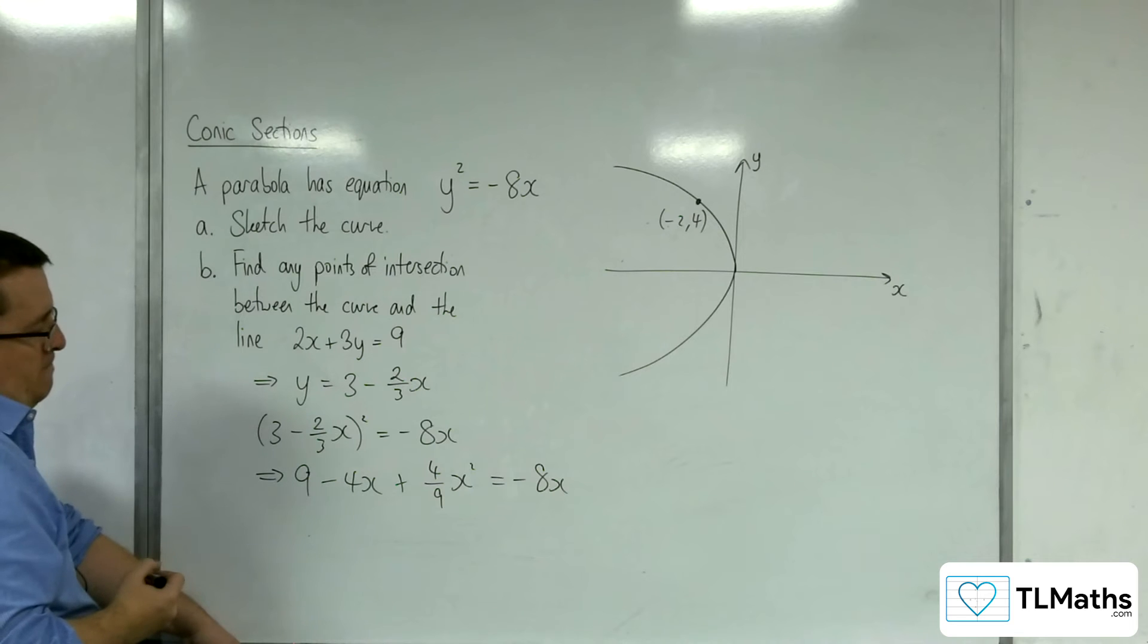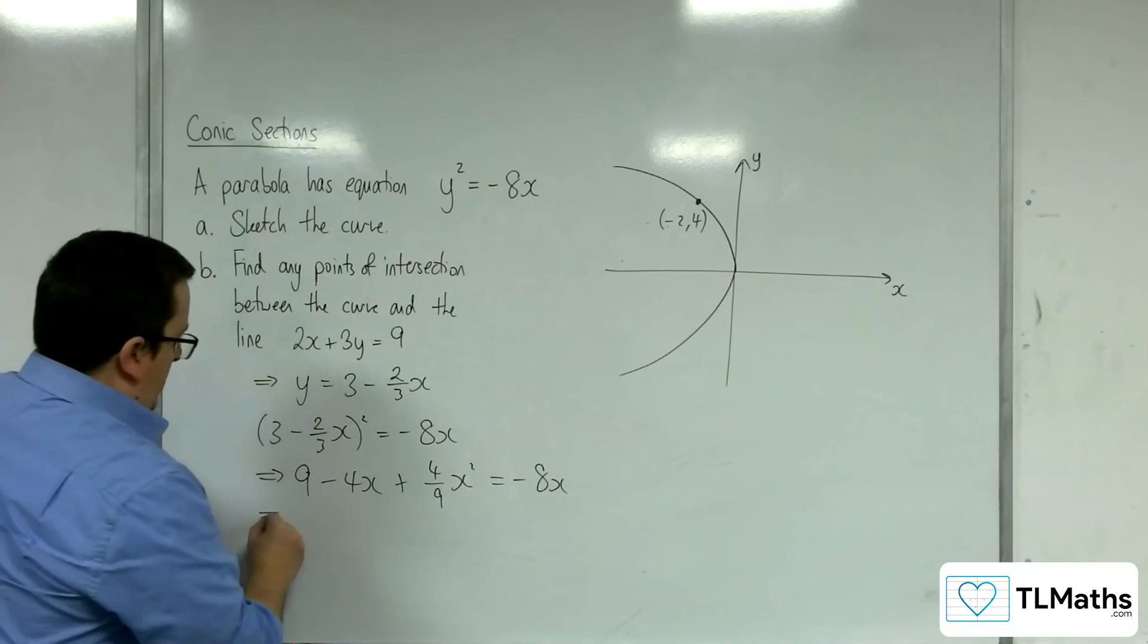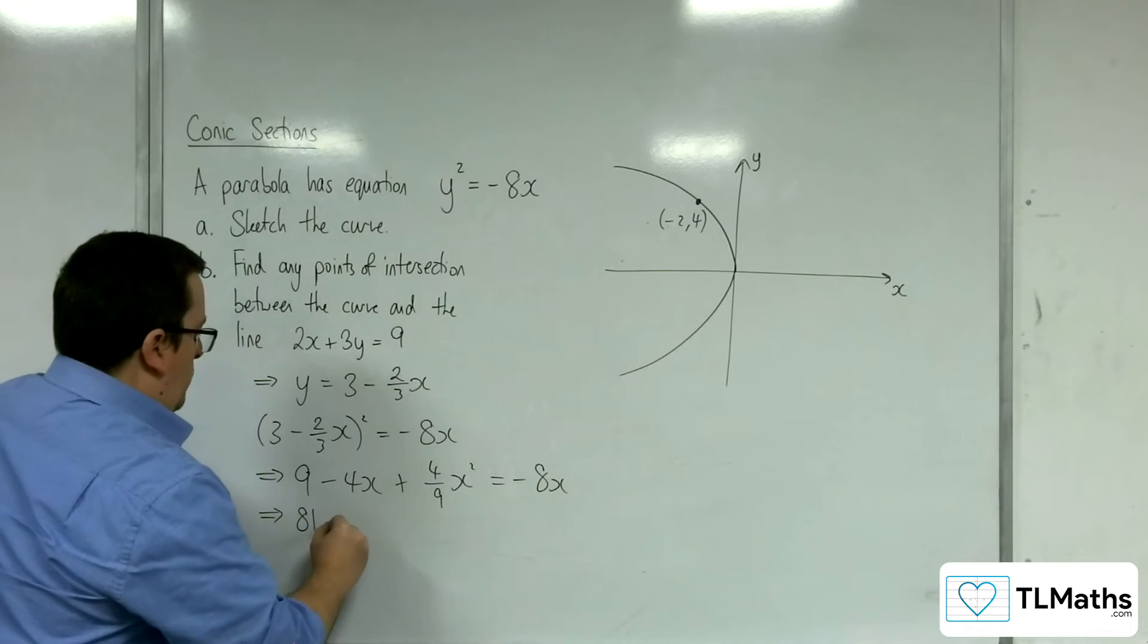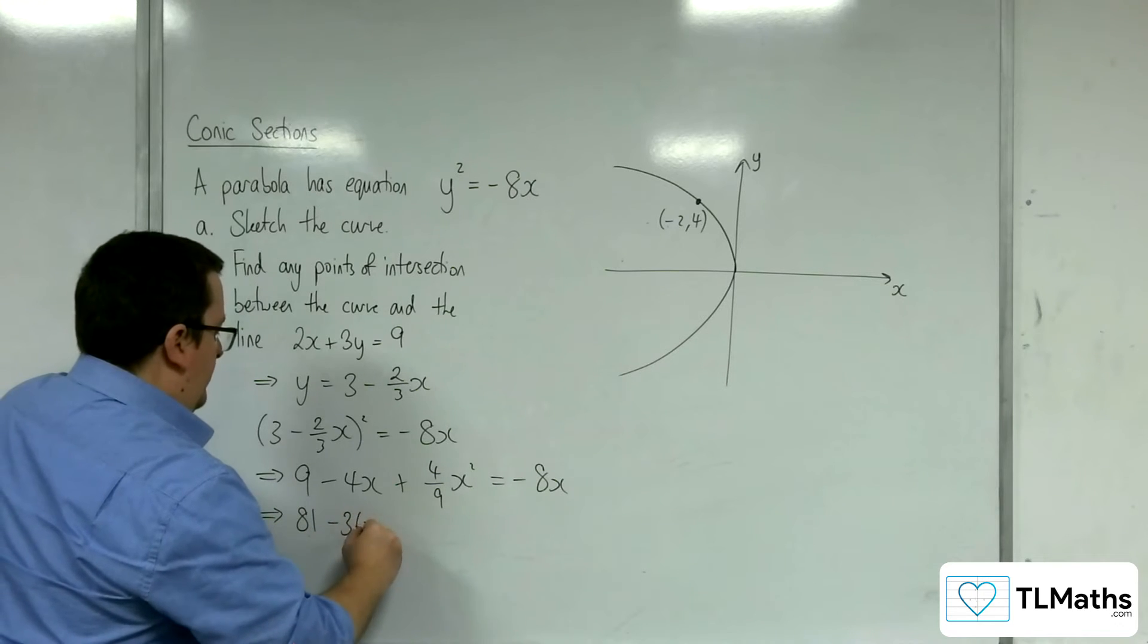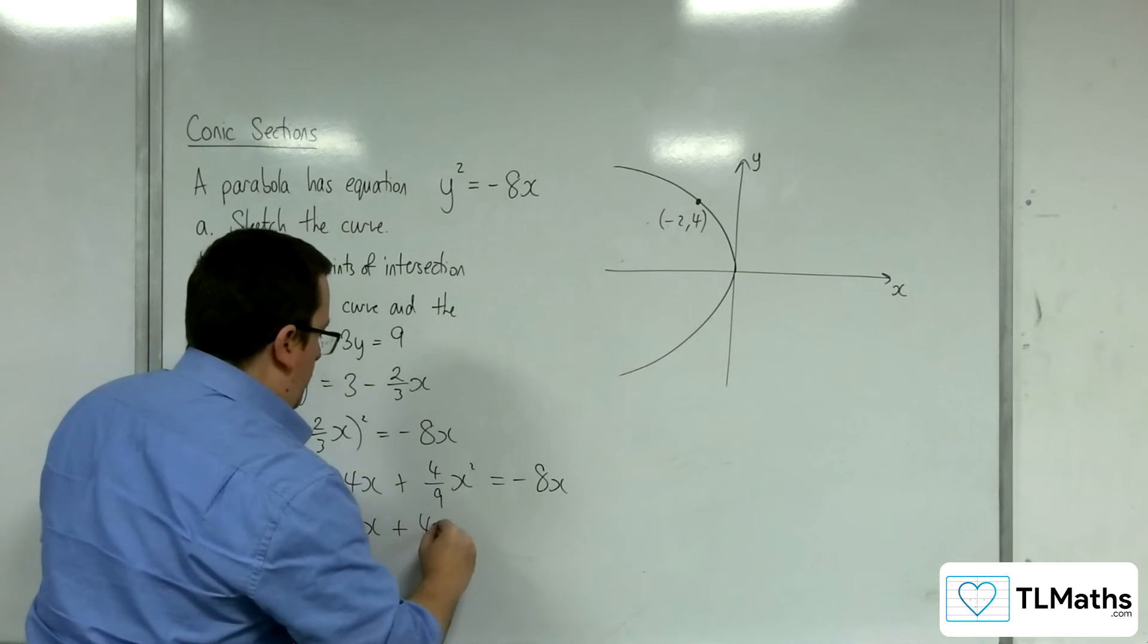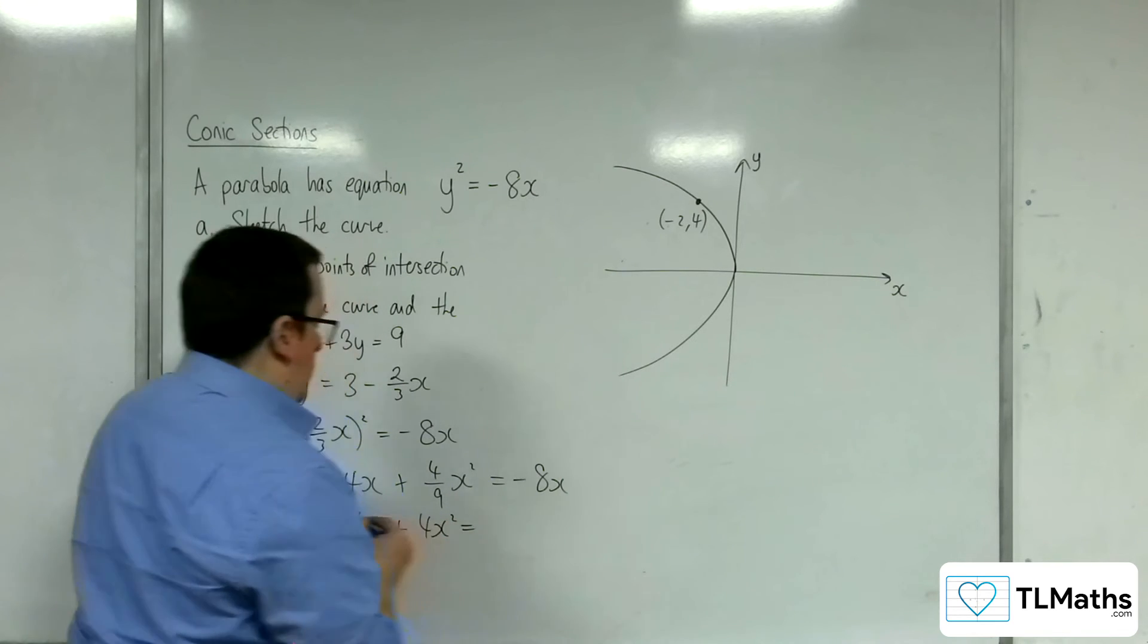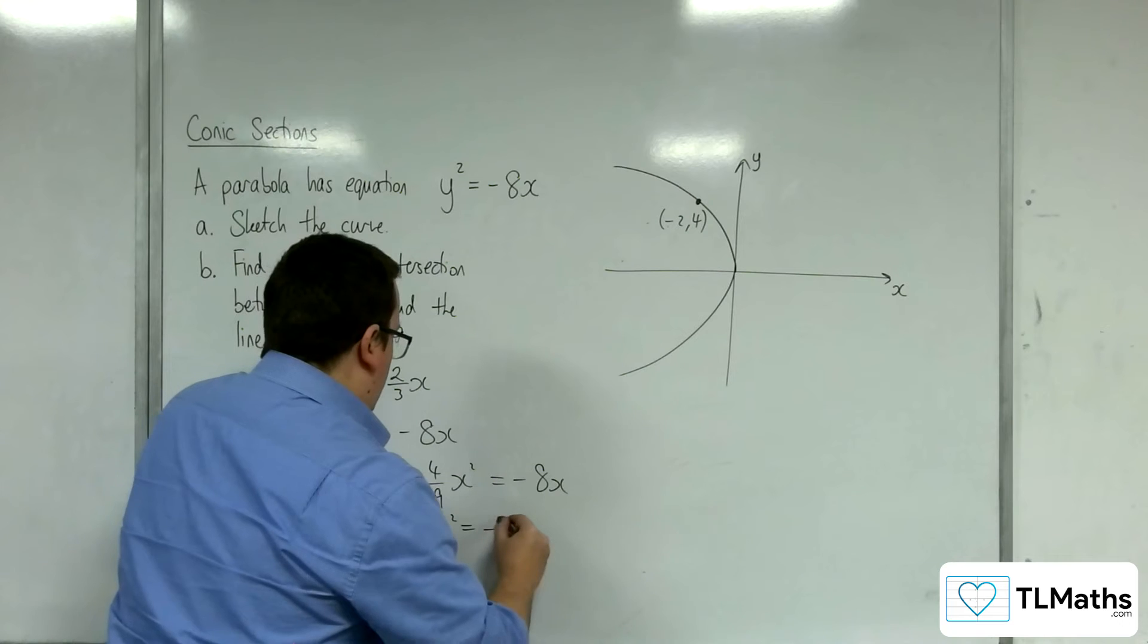Let's multiply through by 9 to get rid of the fraction. So 81 take away 36x plus 4x squared is equal to minus 72x.